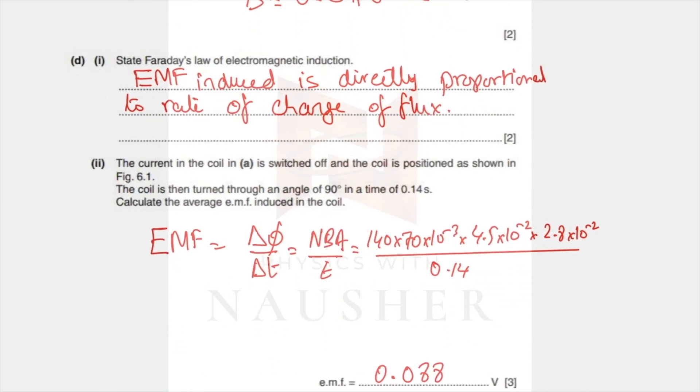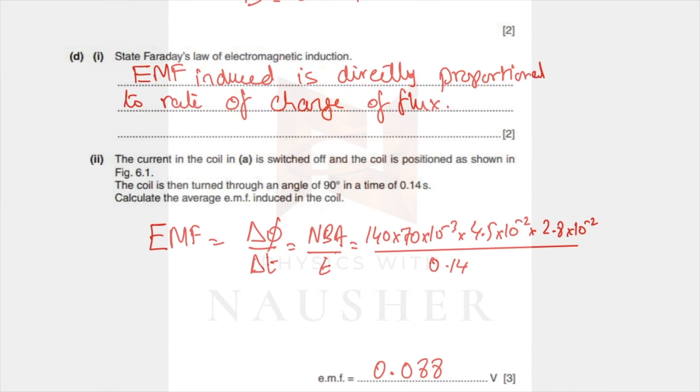Next part: state Faraday's law of electromagnetic induction. EMF induced equals the rate of change of flux: EMF is n delta phi by delta t. I should write an n over here because I've got more than one turn. Then the formula will be n times B times A over t. Number of turns is 140, flux density is 70 milliteslas as we found earlier, area of the coil was length times width in meters, divided by the time 0.14, and you get 0.088 volts.